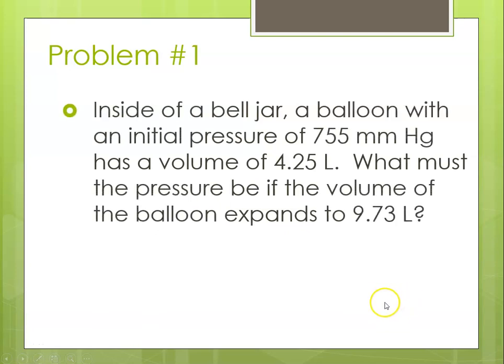Inside of a bell jar, a balloon with an initial pressure of 755 millimeters of mercury has a volume of 4.25 liters. What must the pressure be if the volume of the balloon expands to 9.73 liters?